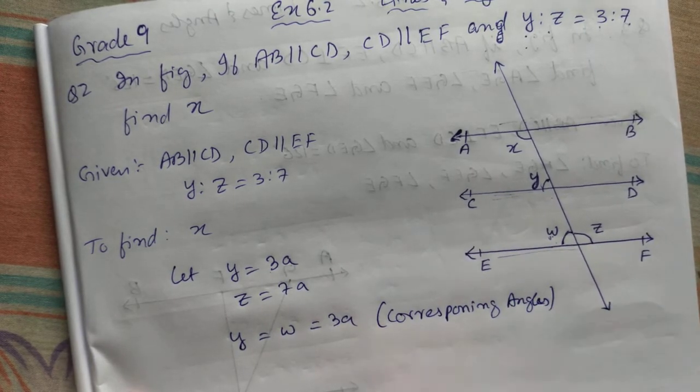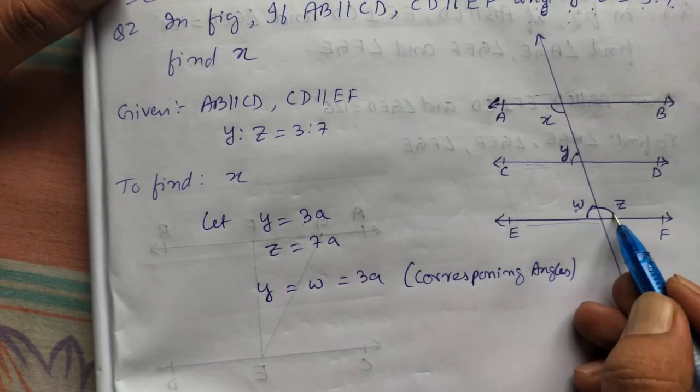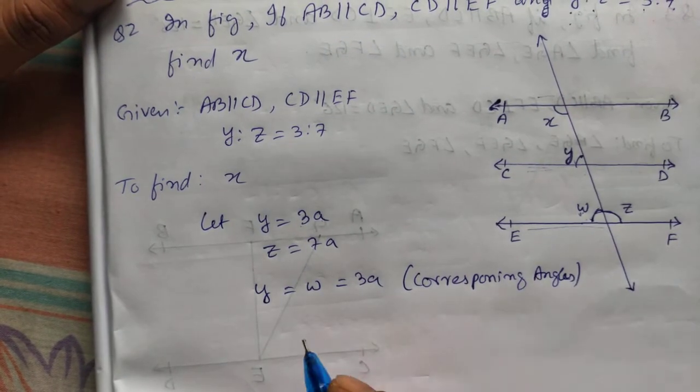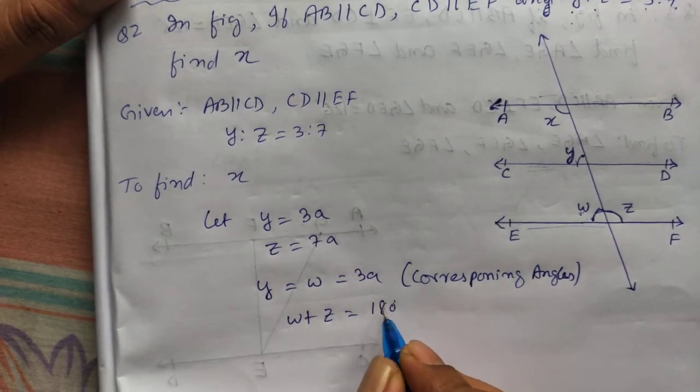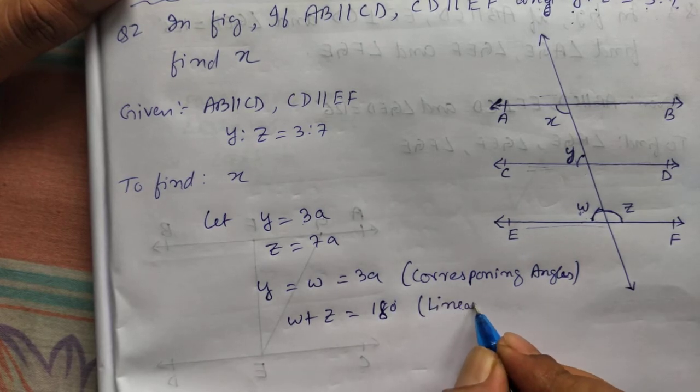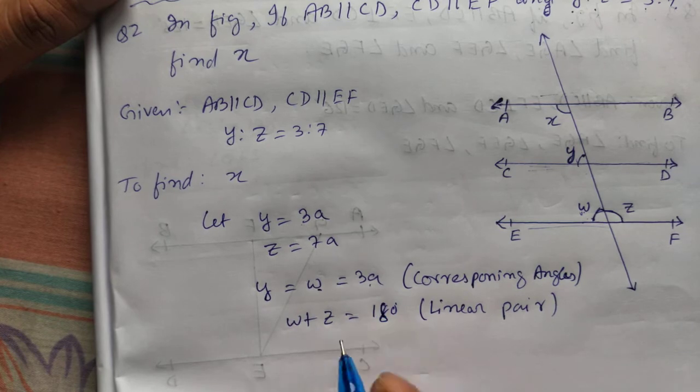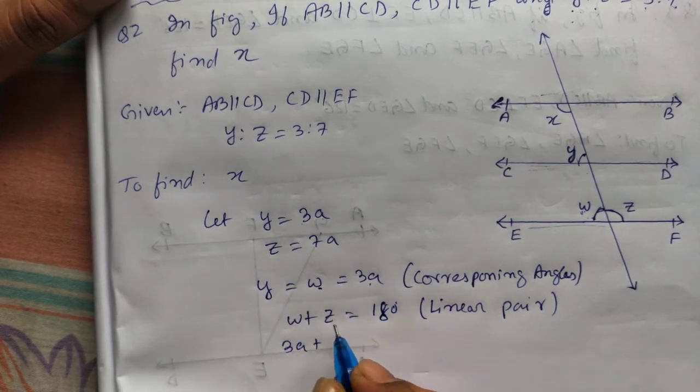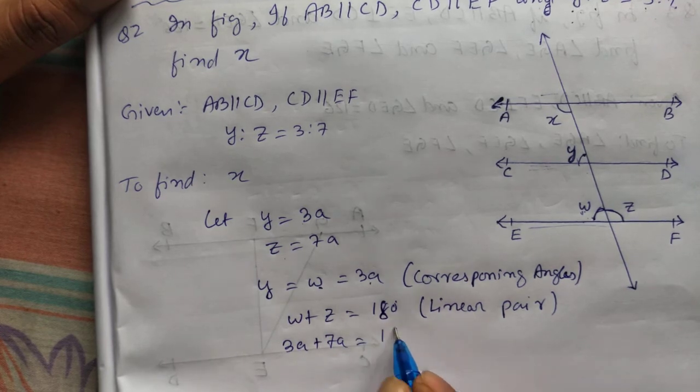If the corresponding angles are same, we can use this now. w plus z will be 180 degree. We call it linear pair. Now, w is 3a and z is 7a. Let us solve this.